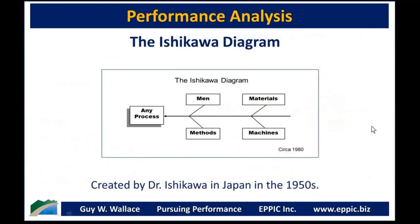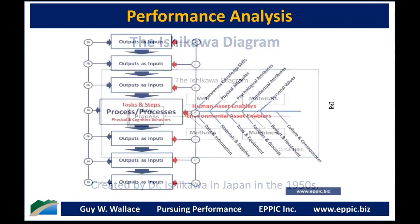Something that impacted me greatly in 1981 when I joined Motorola was the Ishikawa diagram — also known as the cause and effect diagram or fishbone diagram. This is the 1980 version with the 4Ms: men, materials, methods, and machines. Of course, 'men' would be 'people' nowadays. This was created by Dr. Ishikawa, a professor in Japan in the 1950s, and was part of the quality movement of post-World War II Japan.